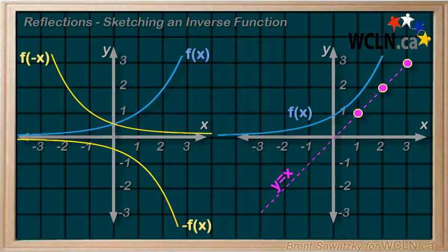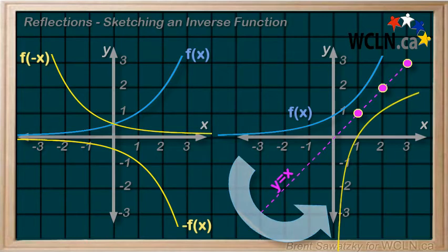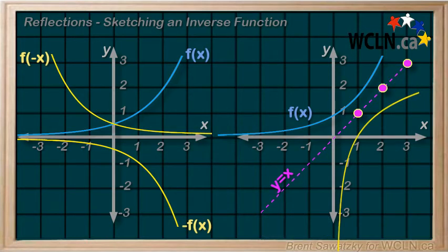y equals x. And we actually have a name for the resulting relation when we reflect around the y equals x line. And we call the reflected relation the inverse of the original.